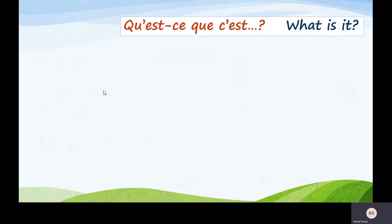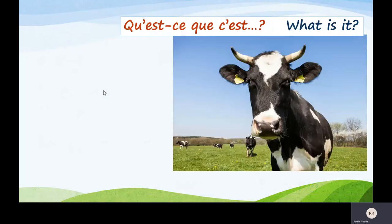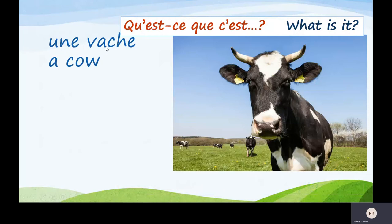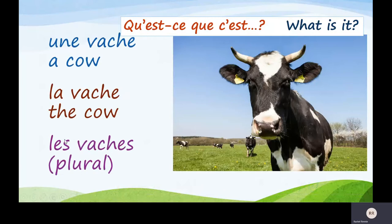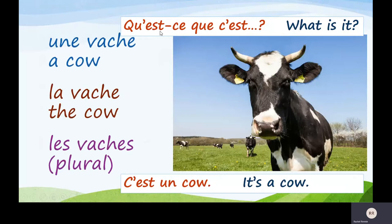What've we got next? Qu'est-ce que c'est? What is it? A cow. So une vache. And look, une — it's another feminine word. Une vache, répétez. La vache — the cow. Les vaches — plural. Qu'est-ce que c'est? C'est une... oh, it's not 'cow,' it's vache. I've written 'cow' instead of 'vache.' Never mind! C'est une vache — it's a cow. Silly Mrs Rennie!